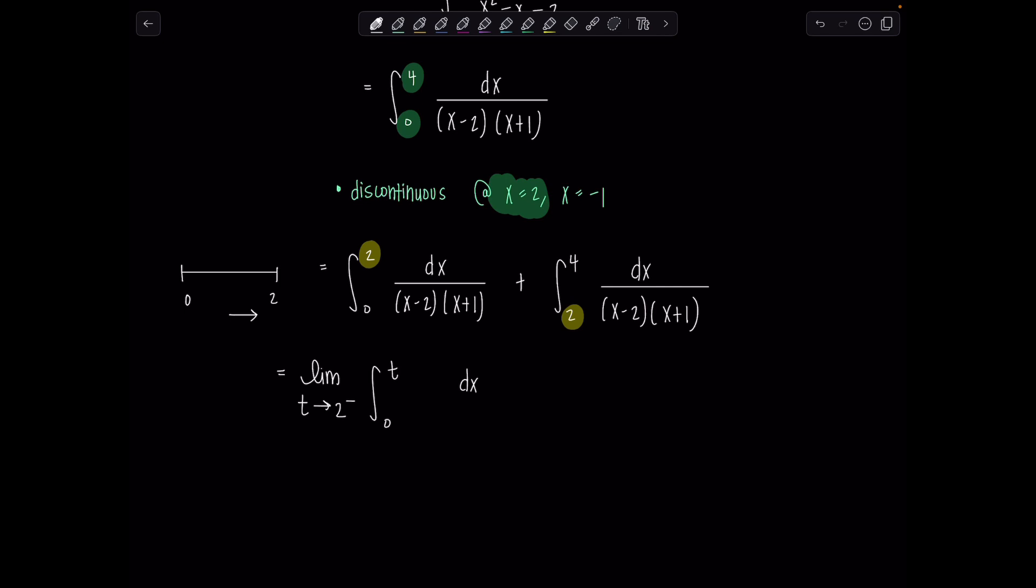and then you need another variable. Let's do s. This time we're approaching 2 from the right, and we go s to 4 dx over x minus 2 and x plus 1. Again, if you're having a rough time figuring out from which side you're approaching, the interval is from 2 to 4. The only way to approach 2 is from the right.